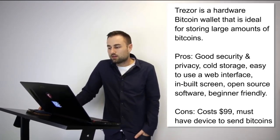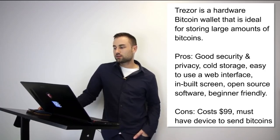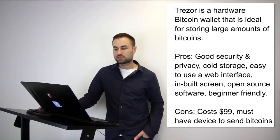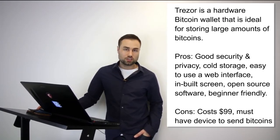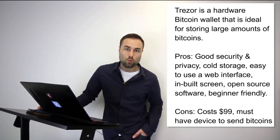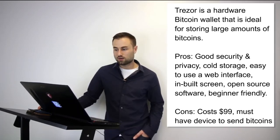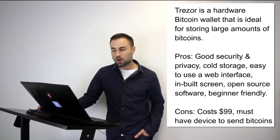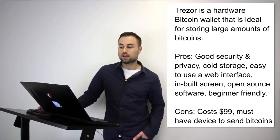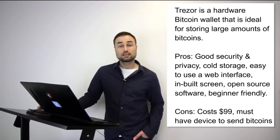Now for two hard wallets. Number one is Trezor — a hardware Bitcoin wallet ideal for storing large amounts. Trezor cannot be affected by malware and never exposes your private keys, making it very safe. Pros: great security and privacy, cold storage, easy-to-use web interface, built-in screen, open source software, beginner-friendly. Cost is around $100. The downside is you must have the device to send bitcoins. I think it's an awesome device and recommend it to most people.